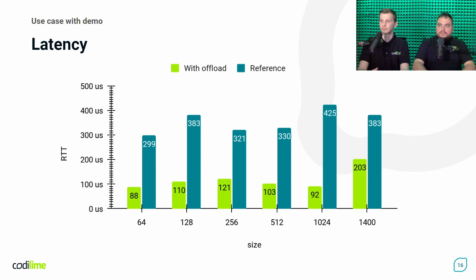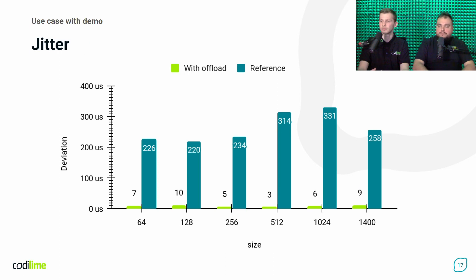And not only is the latency better — if we take a look at jitter, you can see that the packets passing through our hardware offload solution do not present much jitter at all. It means that all packets are processed in equal time by the hardware. On the other hand, in the kernel reference, there is significant jitter measured — due to interrupt handling from the NIC and interrupts from other software running on the kernel.